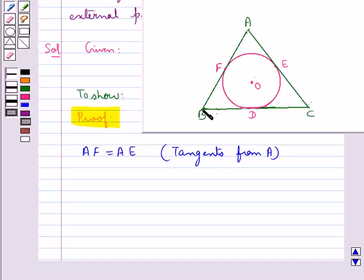So next we have BD and BF are also the tangents from point B. So we have BF equals BD since they are the tangents from point B.